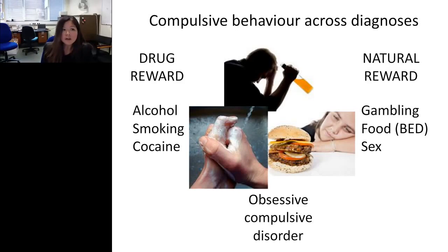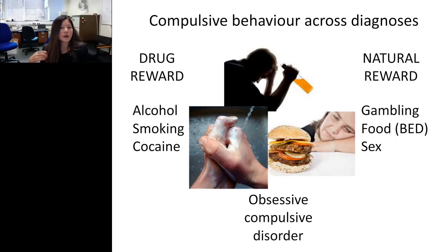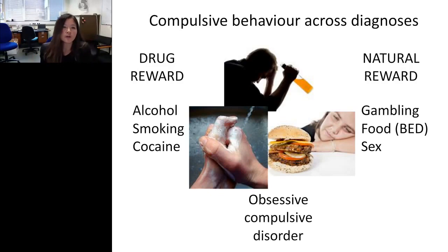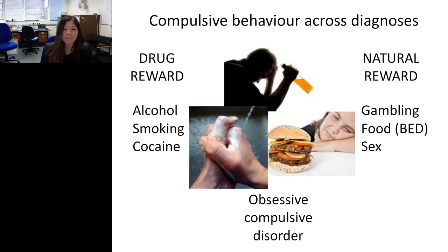We're interested in how this maps trans-diagnostically across a range of psychiatric diagnoses — how it might link certain behaviors such as repetitive drug-seeking that persists despite negative consequences, binge eating disorder where large amounts of food are consumed rapidly despite negative consequences, or obsessive-compulsive disorder where compulsions such as repeated hand-washing occur to avoid an aversive outcome or the anxiety associated with obsessions. We're looking at how goal-directed or habitual behaviors link across these compulsive behaviors that map across different psychiatric diagnoses.